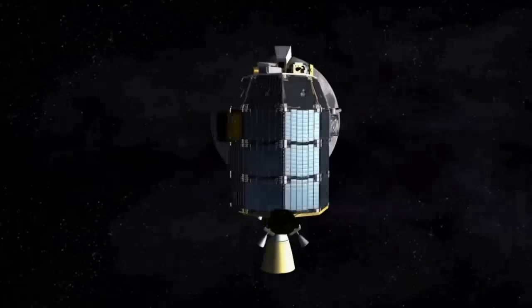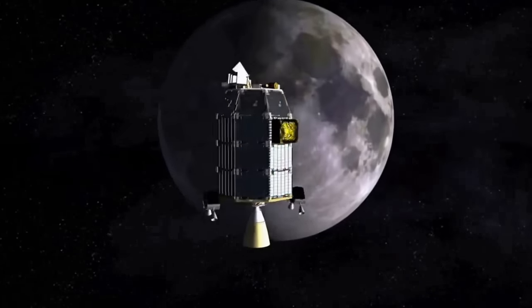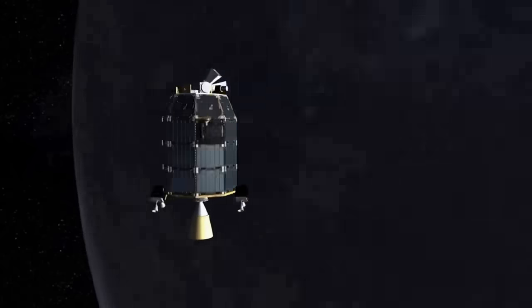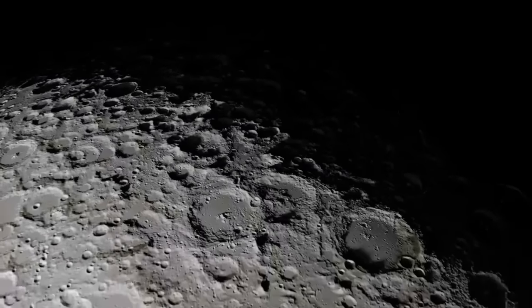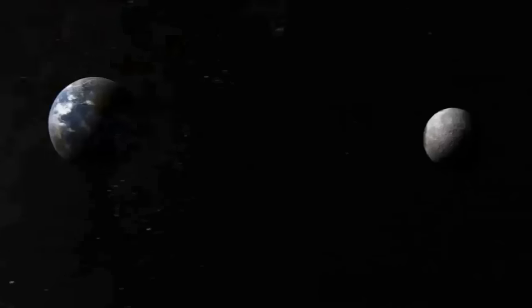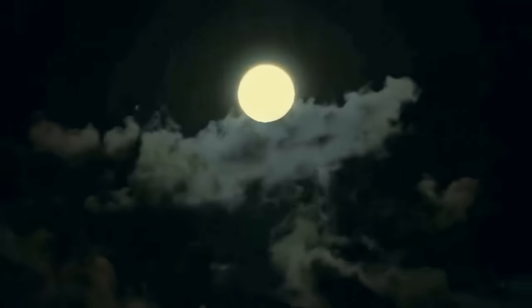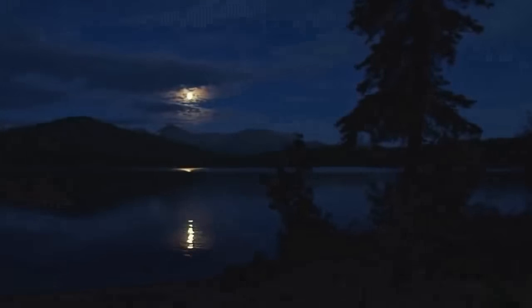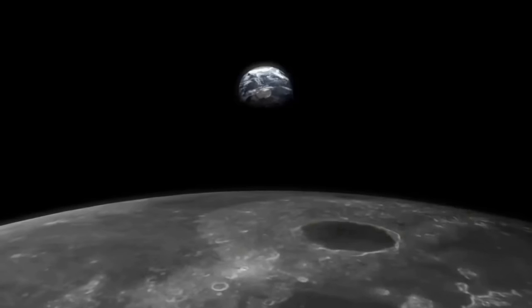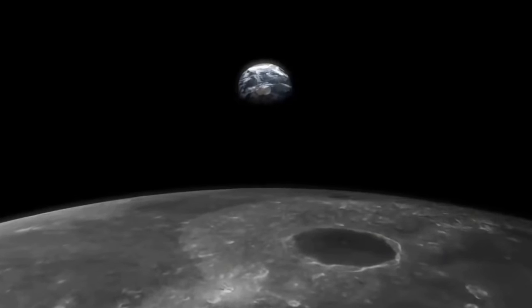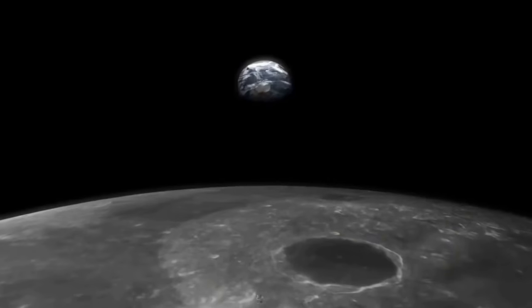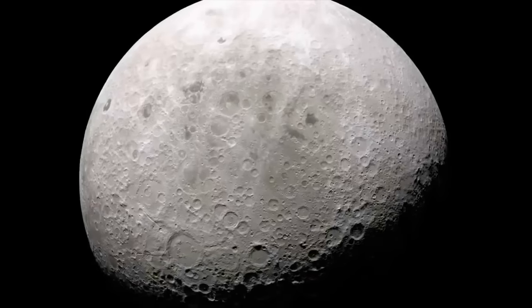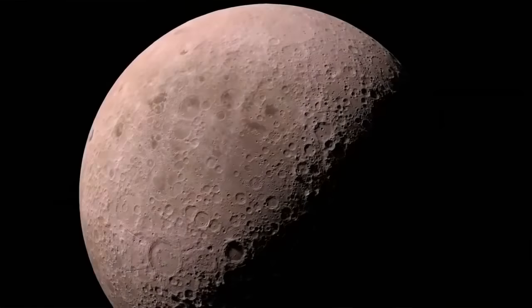But the story is not over. Space probes measure the Moon slipping 3.8 centimeters further away each year. One day, the Moon will break free. When that day comes, there will be no more tides, no more romantic moonlit nights. Could planetary orbits be inherently unstable? Could the chaos of planetary migration return?